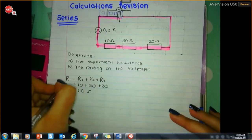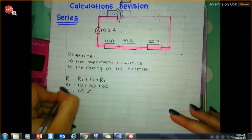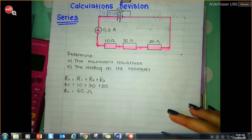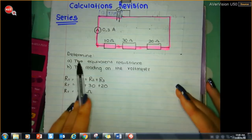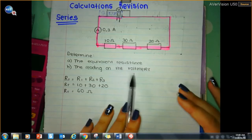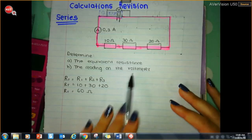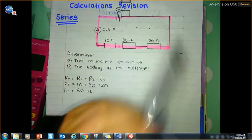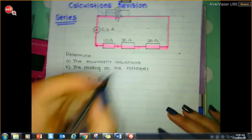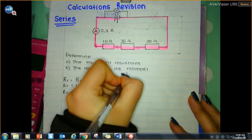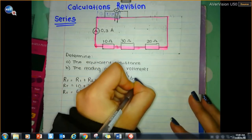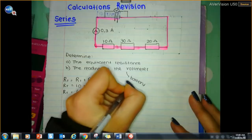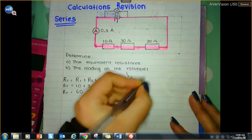That's it — that is the equivalent resistance. There are no resistors in parallel. Then determine the reading on the voltmeter. The voltmeter is connected across the battery, so it's going to be reading the total potential difference.